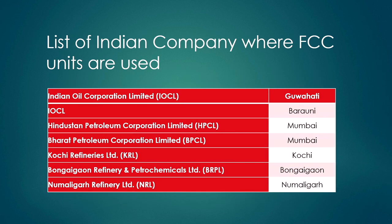In fluid catalytic cracking, heavy hydrocarbons are cracked in the riser fluidized bed in the presence of catalyst particles, giving lighter products separated in a distillation column into different grades of fuel oil. Spent solid catalyst particles are sent back to the regenerator for reuse. Indian companies using fluid catalytic cracking units include: Indian Oil Corporation Limited (Guwahati), IOCL Barauni, Hindustan Petroleum Corporation Limited (Mumbai), Bharat Petroleum Corporation Limited, Rashi Refineries Limited, Bongaigaon Refinery and Petrochemicals Limited (Bongaigaon, Assam), and Numaligarh Refinery Limited (Assam).